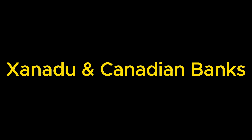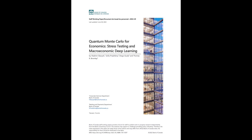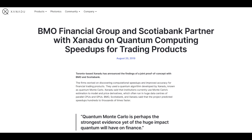Xanadu, a Canadian quantum startup based in Toronto, was established in 2016. With a team of over 170 and $275 million in funding, the company uses a photonic approach for qubits. Xanadu collaborated with the Bank of Canada to test a quantum Monte Carlo algorithm, and in June 2022 a working paper titled 'Quantum Monte Carlo for Economics: Stress Testing and Macroeconomic Deep Learning' was published. Xanadu also worked with Canadian commercial banks — in 2019, the company researched with BMO and Scotiabank on quantum computing speed-ups for trading, predicting speed-ups hundreds to thousands of times faster.